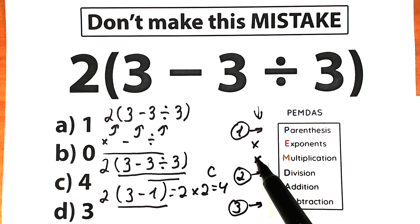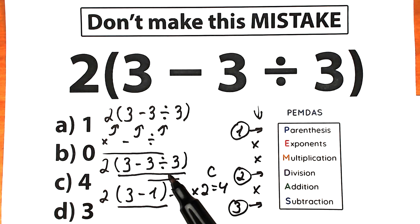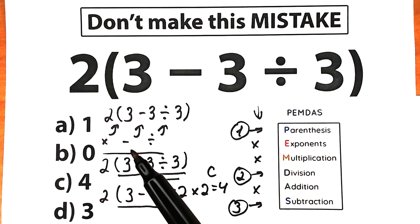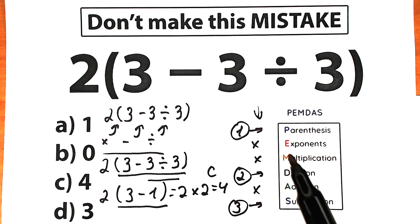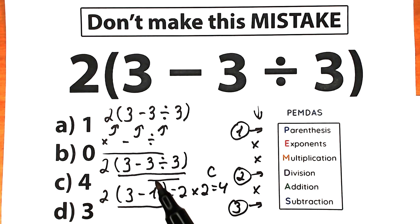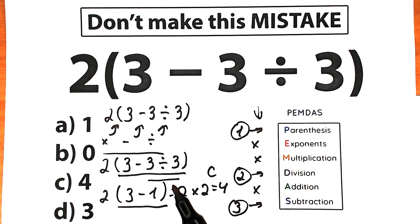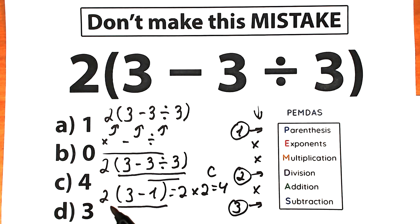We don't have any exponents or addition remaining, so let's recap. We solved this challenge according to PEMDAS. First, we found the parentheses and evaluated the expression inside. Inside the parentheses we had a subtraction sign and a division sign — we divided first because division has higher priority than subtraction: 3 divided by 3 equals 1. Then we subtracted: 3 minus 1 equals 2. Our last step was multiplication: 2 times 2 equals 4. This is option C — the correct answer and correct approach.